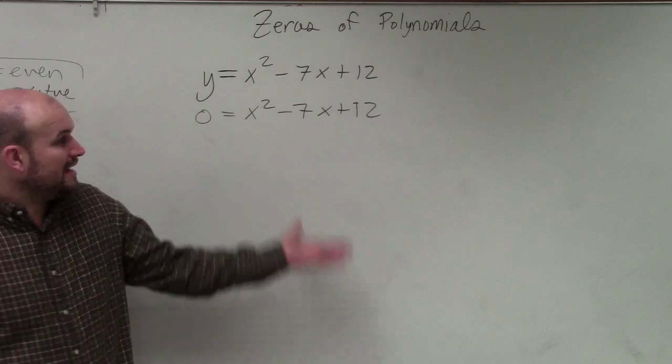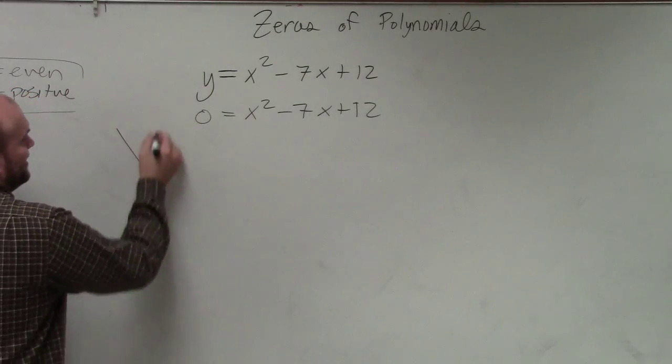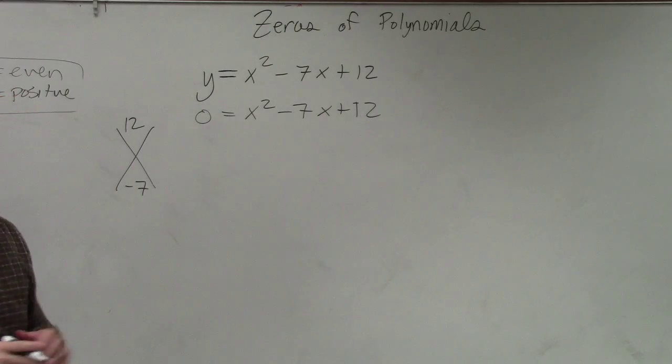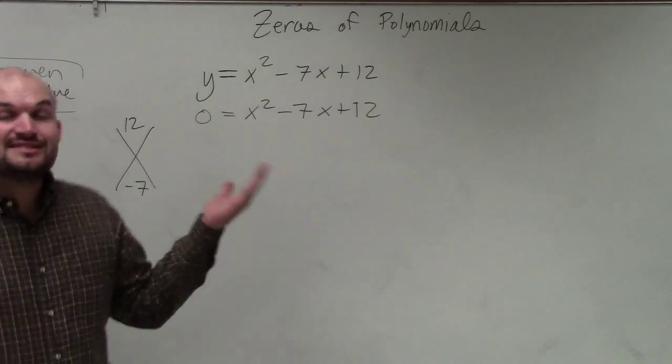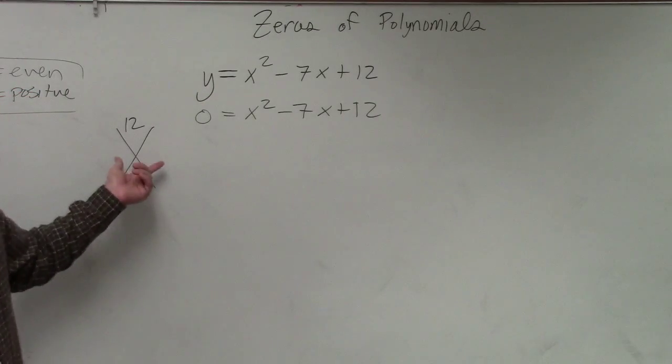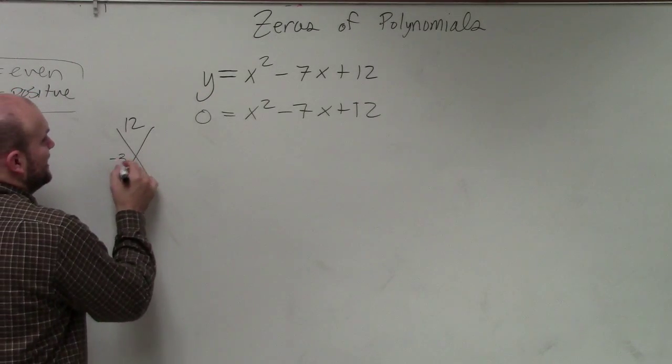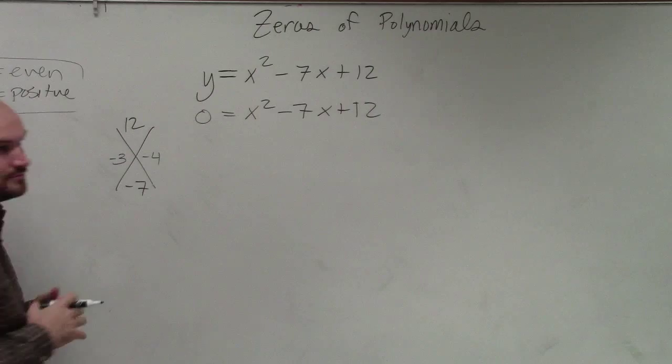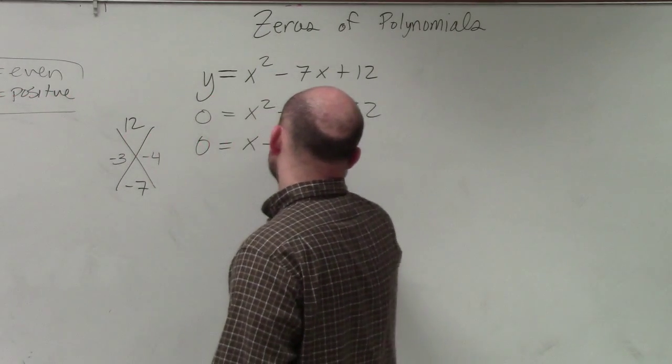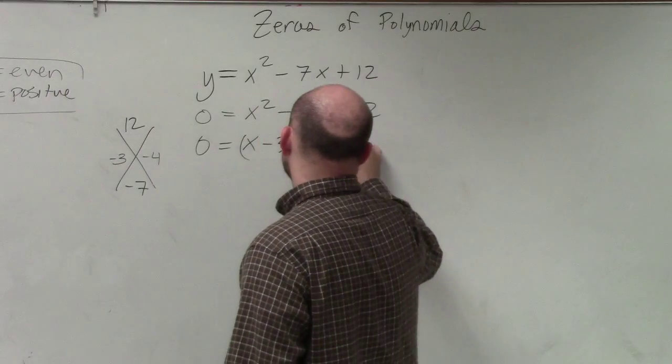Now we just need to factor. And basically, our factoring technique, the way that I said, was what two numbers multiply to give you 12 and then add to give you negative 7. Since I'm adding to give us negative 7, I know that both of my two factors are going to have to be negative. And I obtain negative 3 and negative 4. So therefore, this is 0 equals x minus 3 times x minus 4.